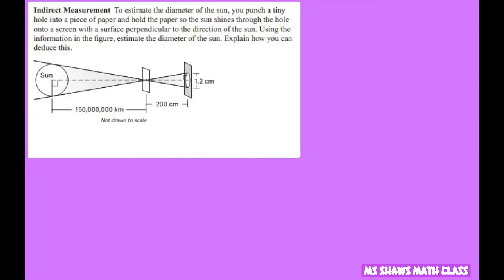Hi! To estimate the diameter of the Sun you punch a tiny hole into a piece of paper and hold the paper so the Sun shines through the hole onto a screen with the surface perpendicular to the direction of the Sun.